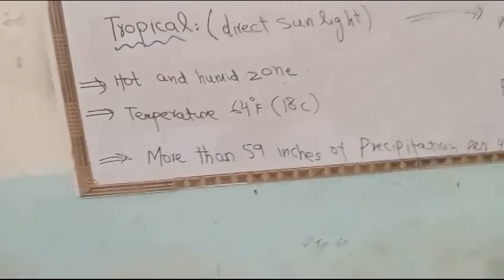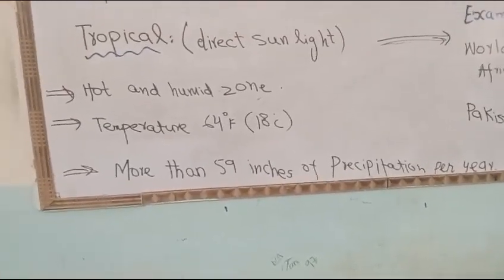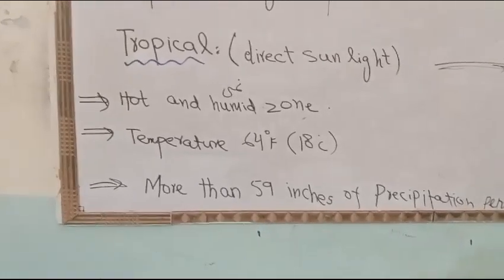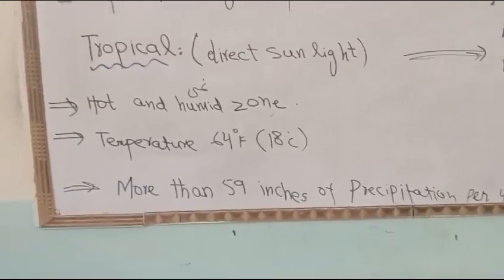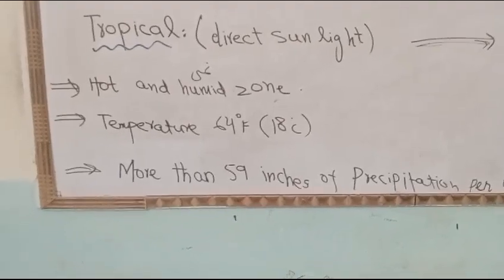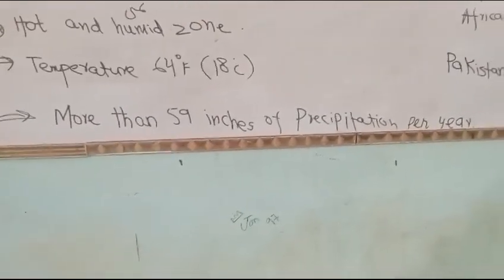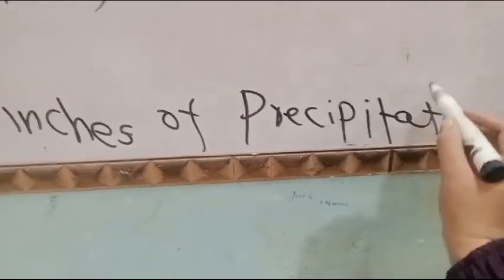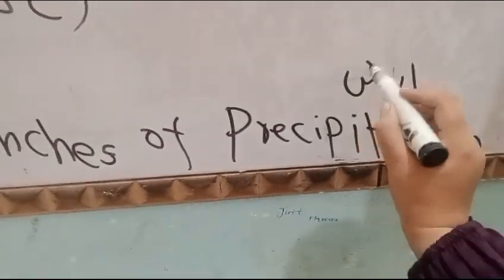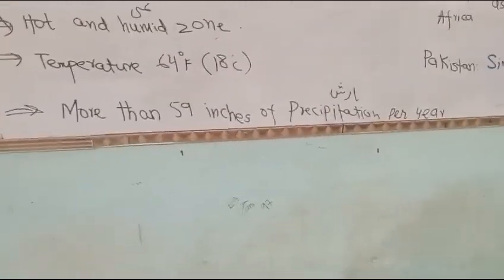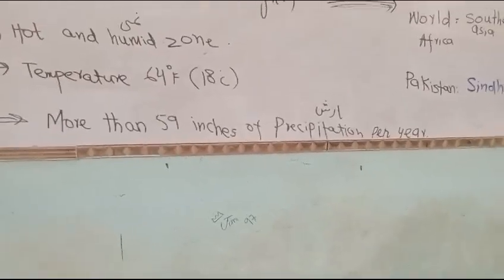In the tropical zone, the temperature is 64°F, which is 18 degrees Celsius or higher. There is more than 59 inches of precipitation per year. Students should know what precipitation means — it refers to rainfall. In the tropical region, more than 59 inches of precipitation occurs per year.